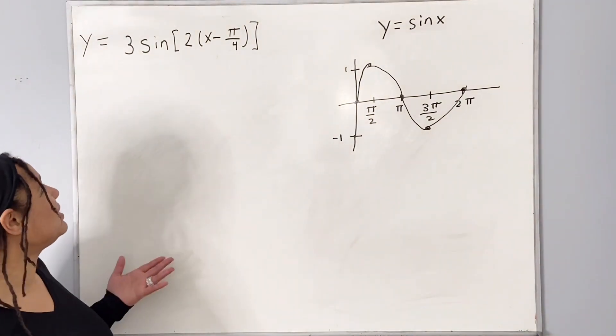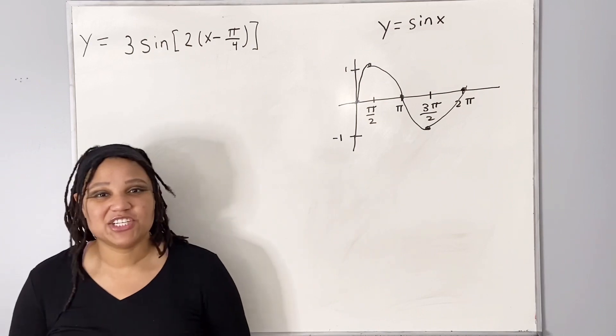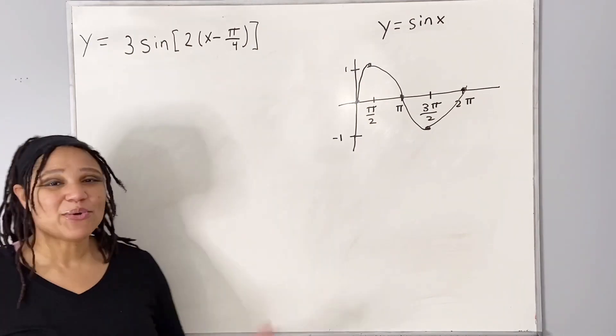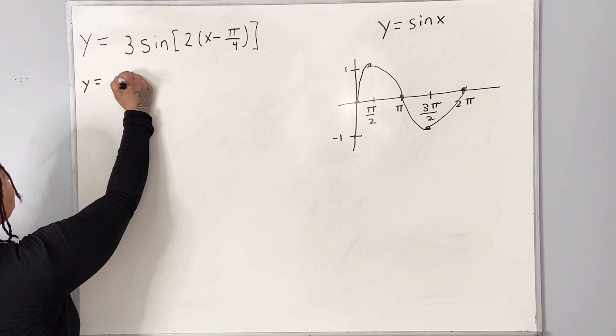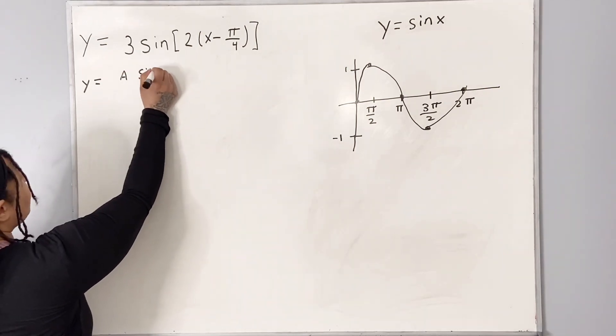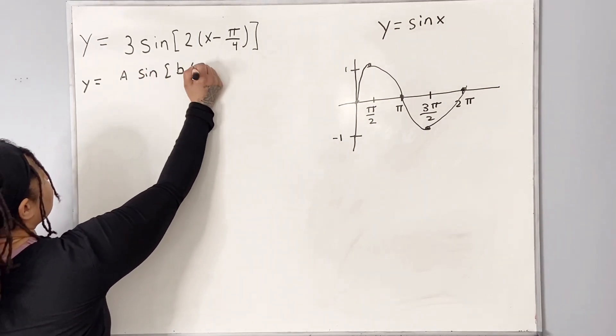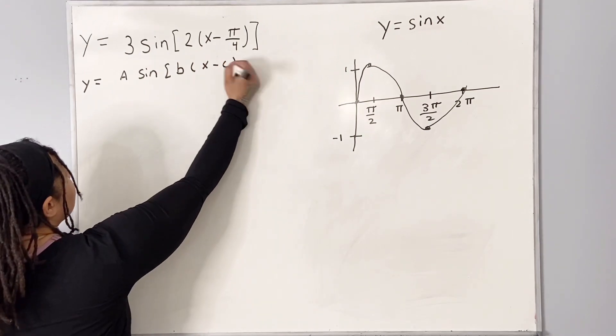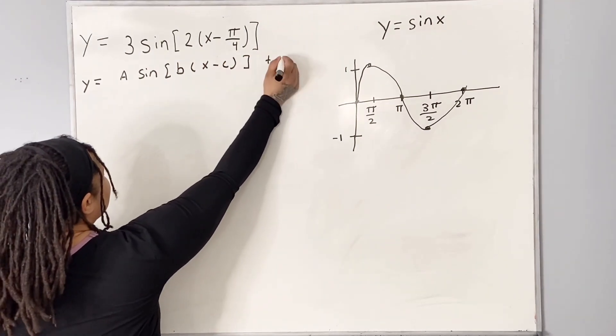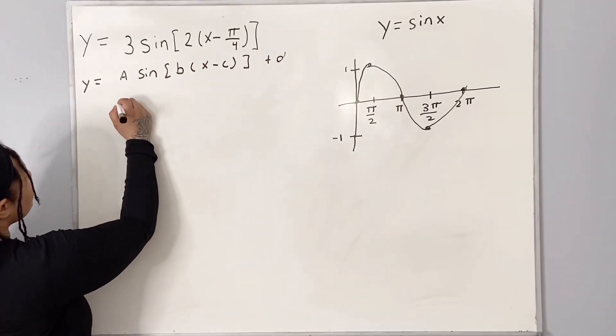So now we need to apply the transformations that we're given. So here we have the form y equals a sine of b x minus c plus d, where a is 3.